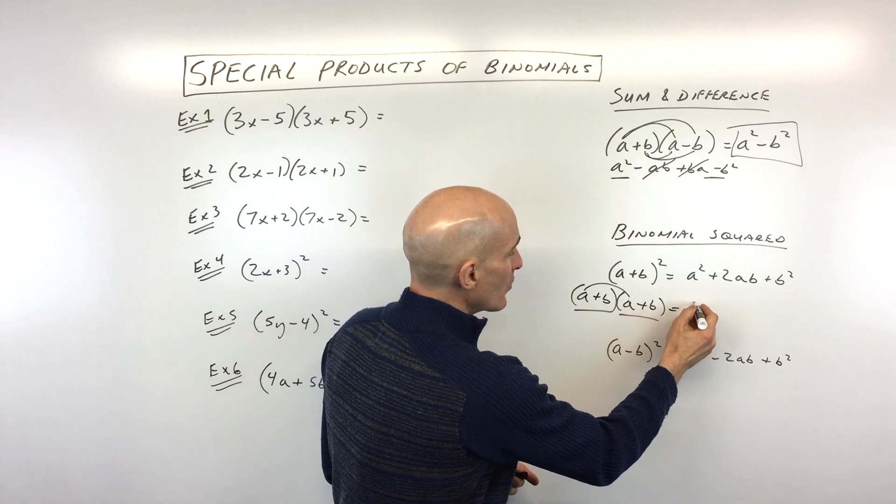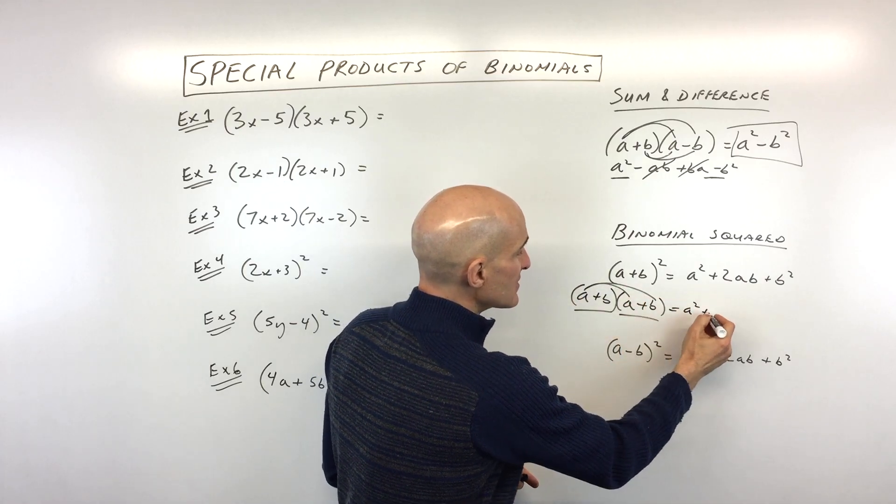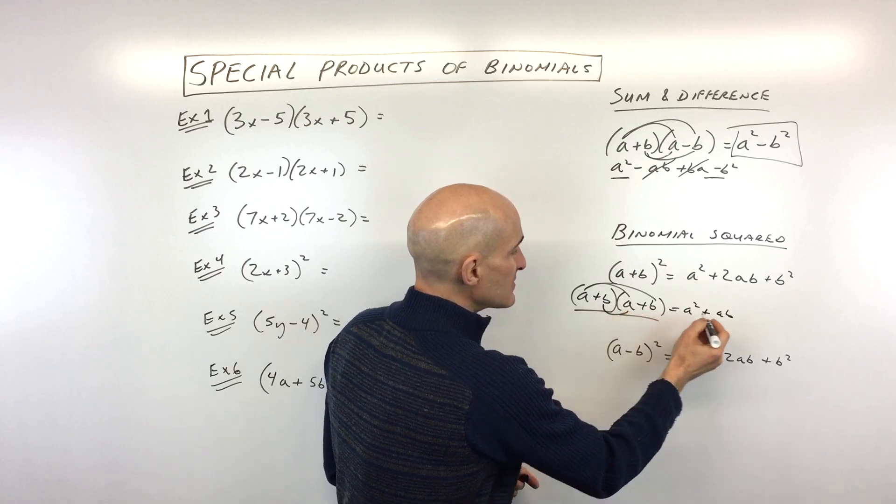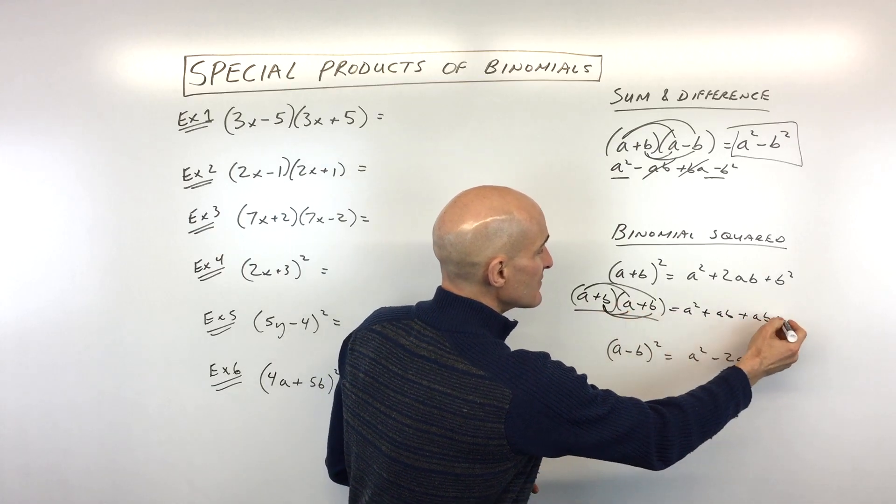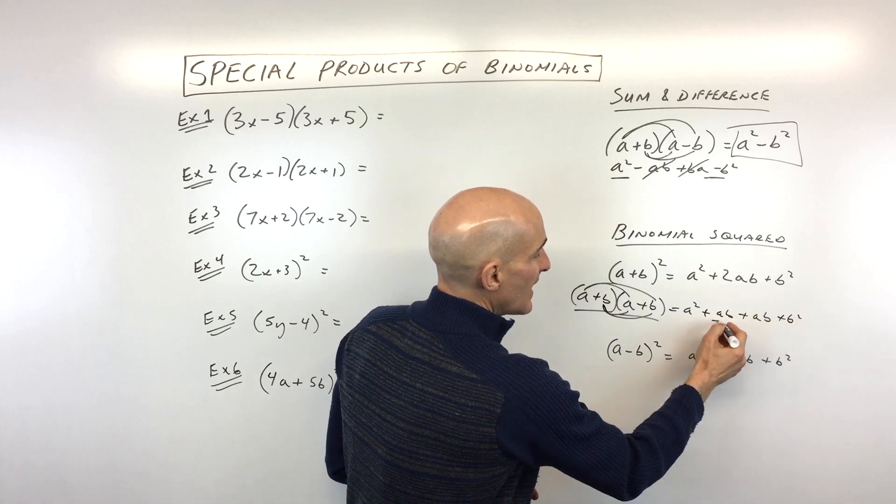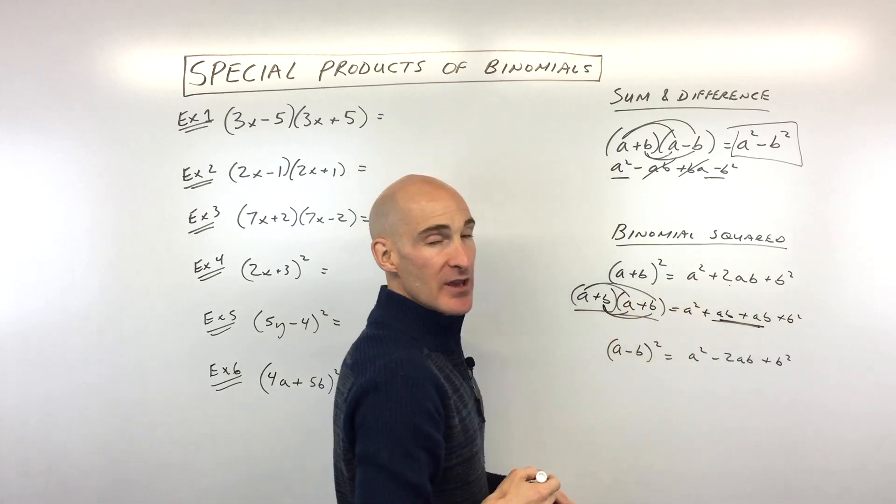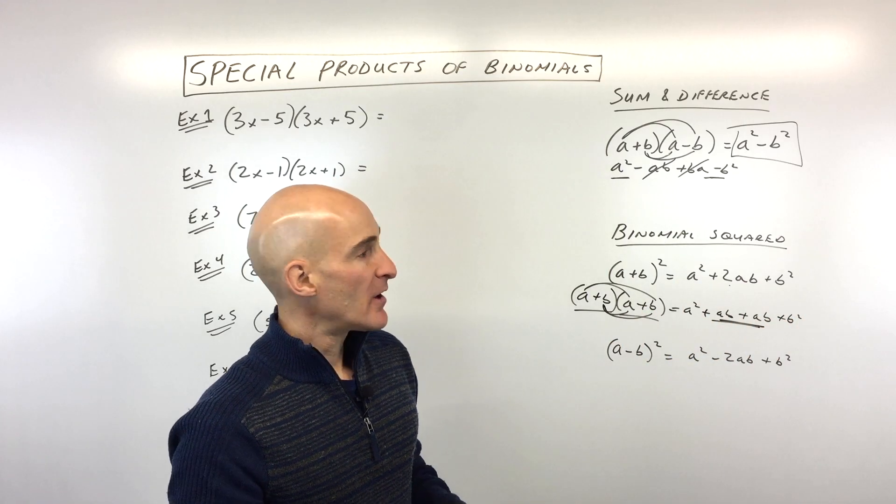So a times a is a squared. a times b gives us ab. b times a gives us ab again. And then b times b gives us b squared. And you can see ab plus ab is 2ab.